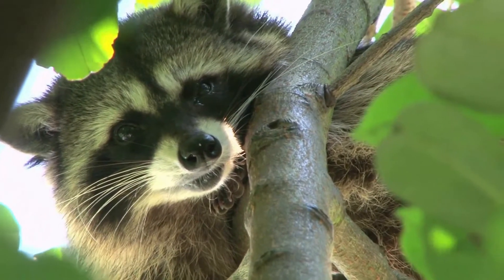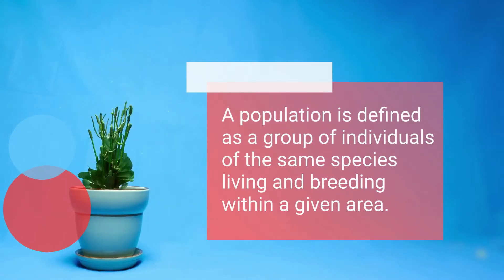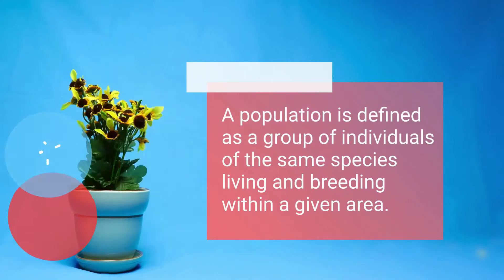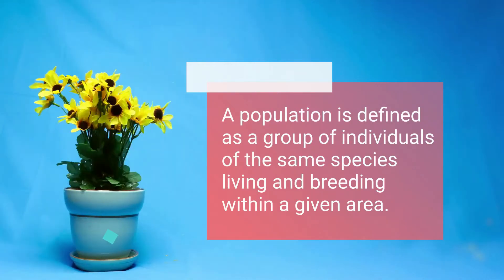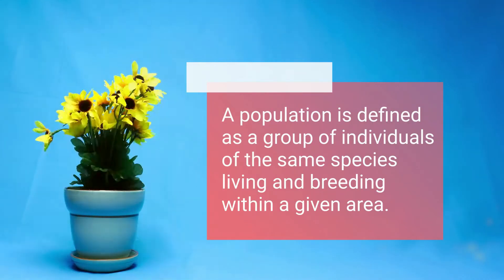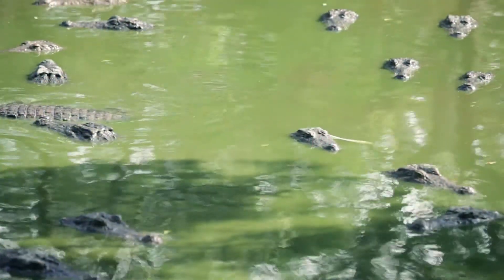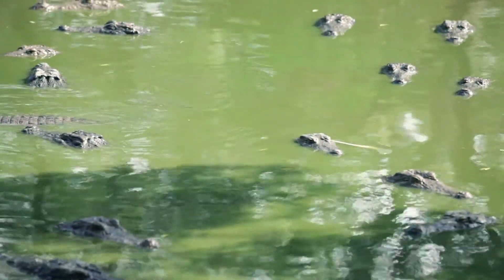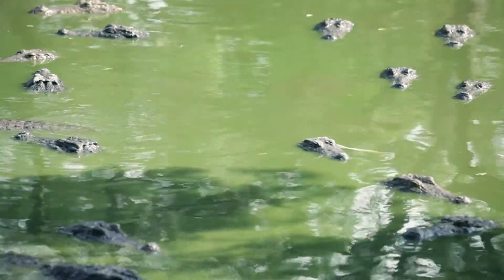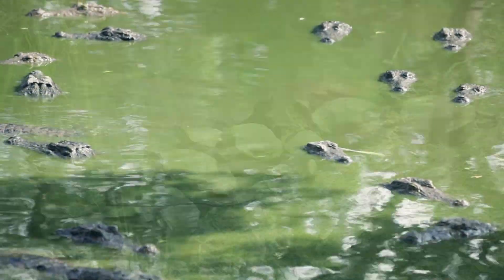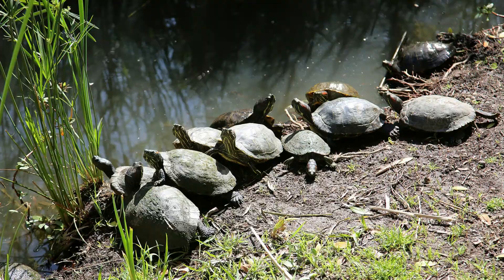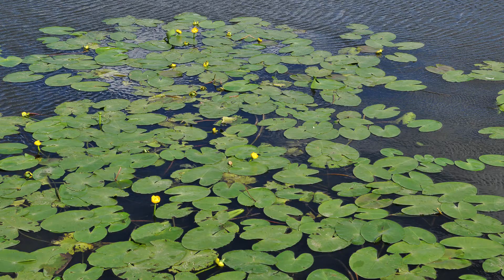A population is defined as a group of individuals of the same species living and breeding within a given area. In the swamp, this would include populations of alligators, turtles, and water lilies.